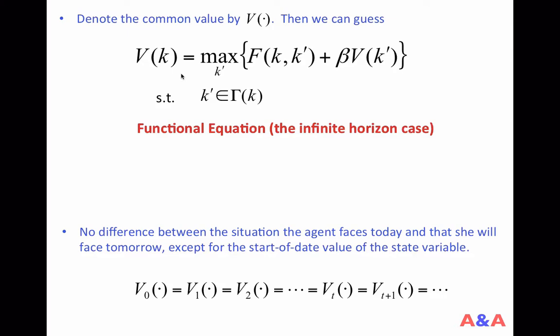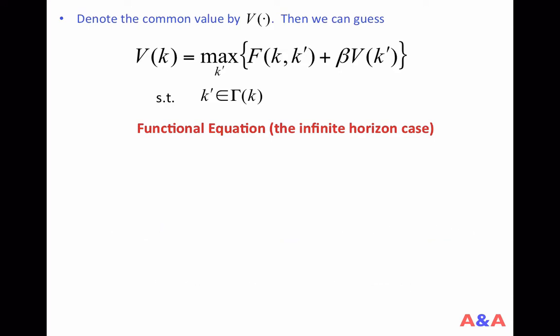Then we can guess that the following functional equation should hold. This expression is very similar to the one we had before. One difference is that we have the same V function on the left-hand side and on the right-hand side. This is the functional equation, the Bellman equation for the infinite horizon case. So, for the infinite horizon problems, although we can no longer resort to the backward induction method, instead, we can successfully convert the original sequential problem into the functional equation with respect to V.